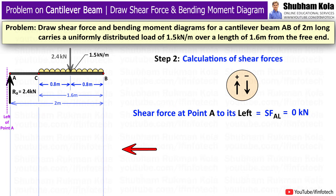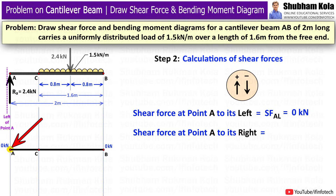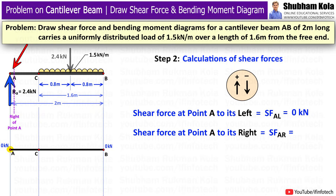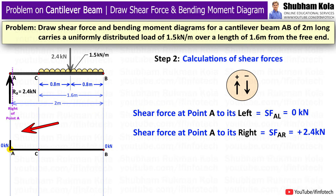To draw the shear force diagram, I first draw a horizontal reference line at 0 kN. The shear force at point A to the left is marked as 0 kN on the reference line. Moving to the right of point A, there is reaction force RA acting upward. As per the sign convention, upward forces are positive, so the shear force jumps to plus 2.4 kN, and I draw a vertical line up to 2.4 kN.